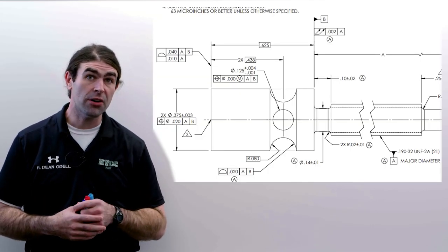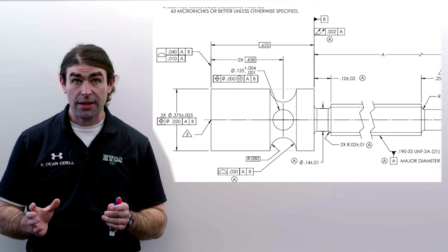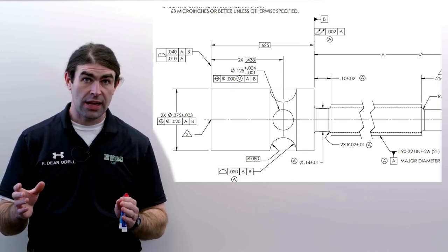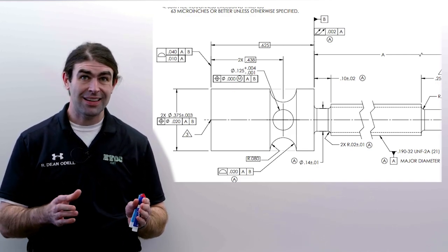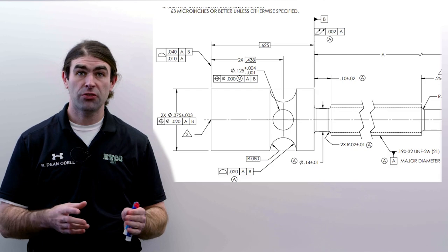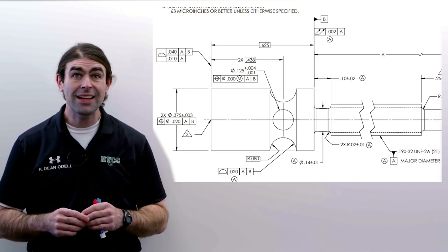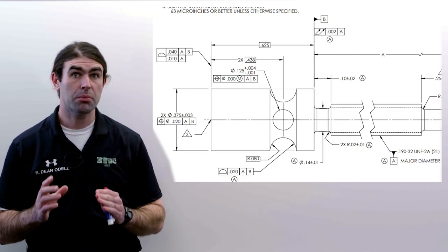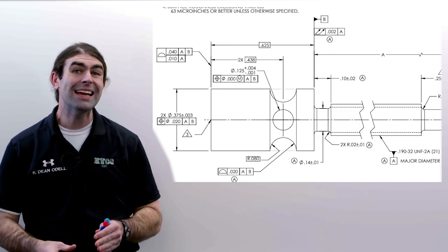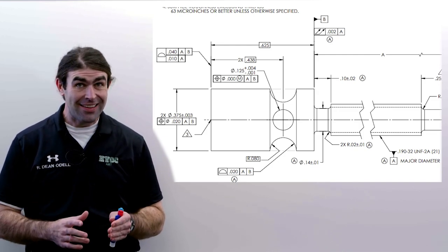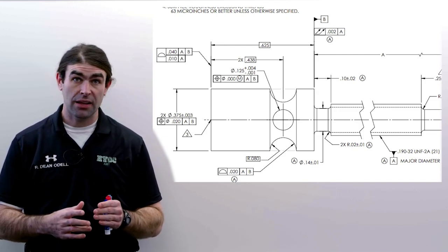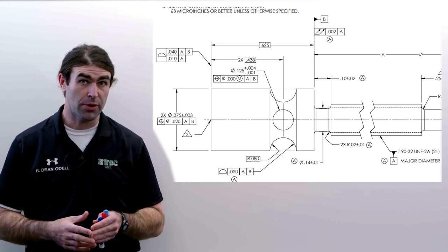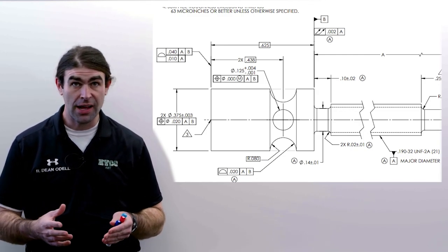I'll put the drawing on the screen here. We've got a profile of 40 thousandths to A and B, and then 10 thousandths just to A. We've got one geometric characteristic symbol, so it's a composite profile. In this case it actually means the same thing as two single segment profile, and I'll explain why right now.